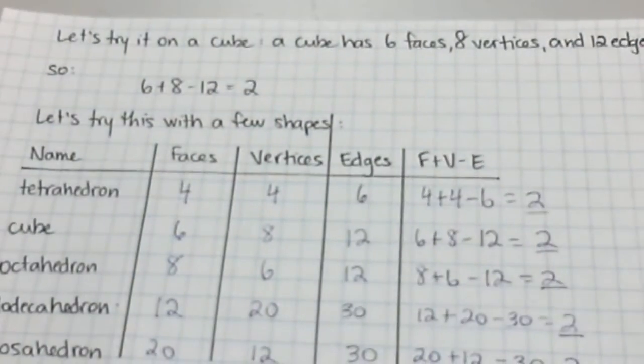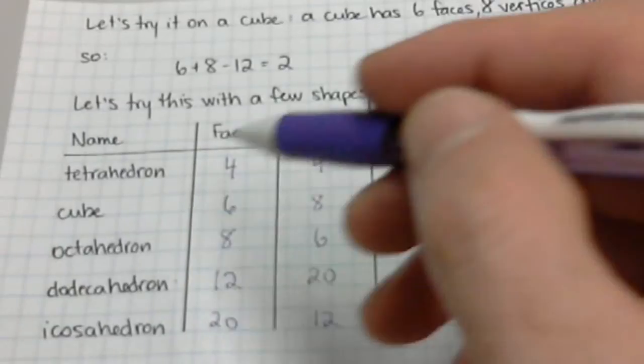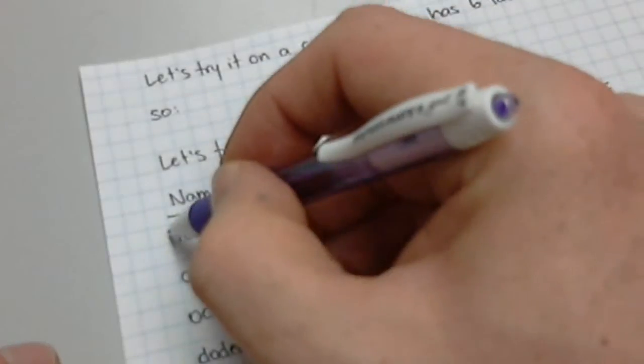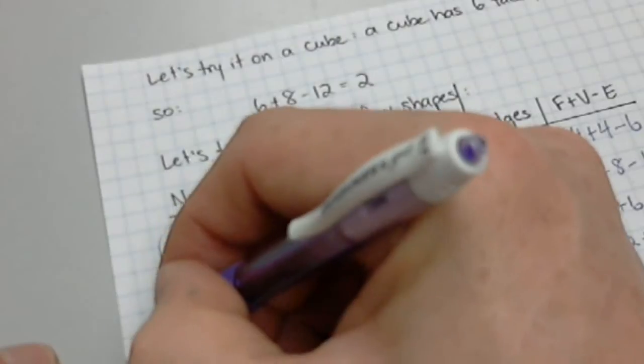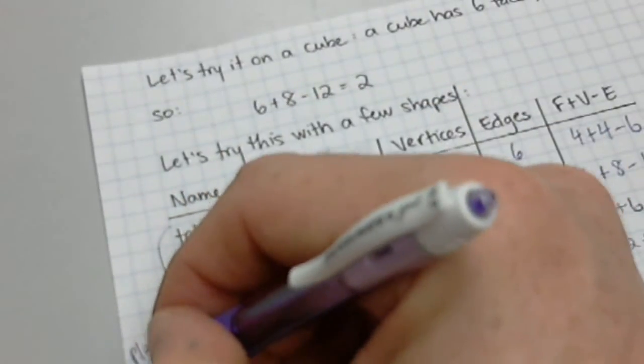So I have something here about cubes—six bases, eight vertices, and 12 edges. Now these five shapes, they are all called platonic solids.